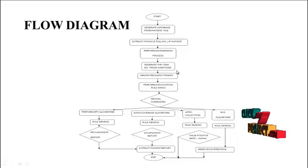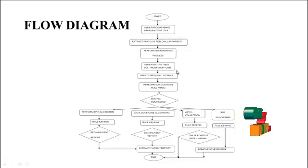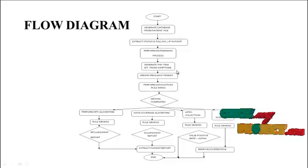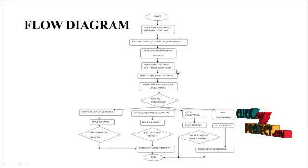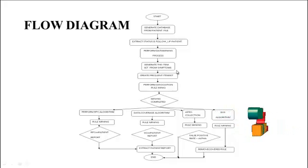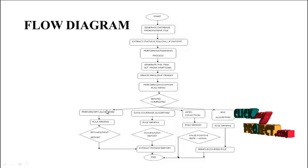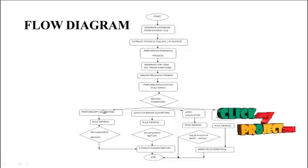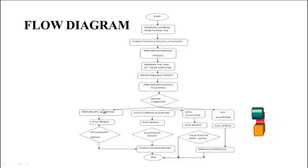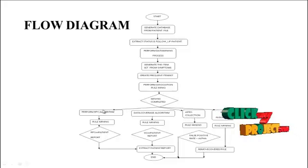Here we are using the diabetic dataset. Based on the diabetic dataset, what are the symptoms to be used? For example, weight loss and skin problems — these are some symptom-based data items. We find out what diseases the patients have by creating a frequent item set based on the diabetic dataset. After that, we perform association rule mining using RPC algorithms, the data coverage algorithm, Apriori collections, and the BUS algorithm.